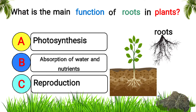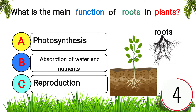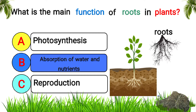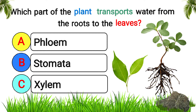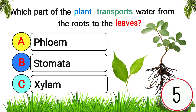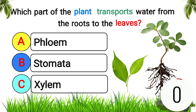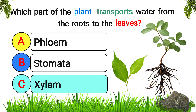What is the main function of roots in plants? Answer: absorption of water and nutrients. Which part of the plant transports water from the roots to the leaves? Answer: xylem.